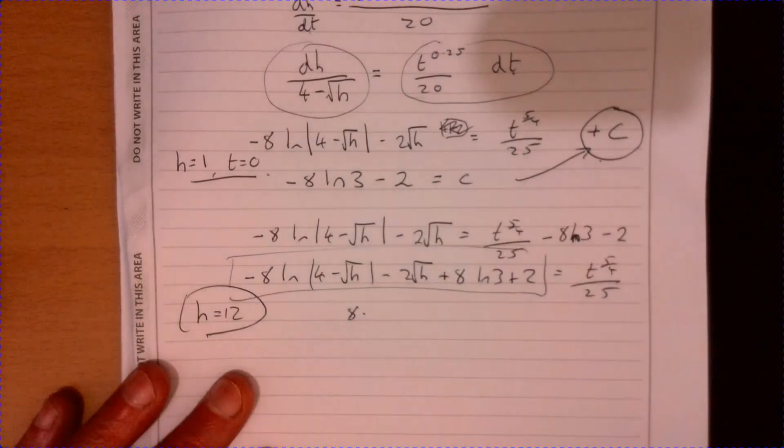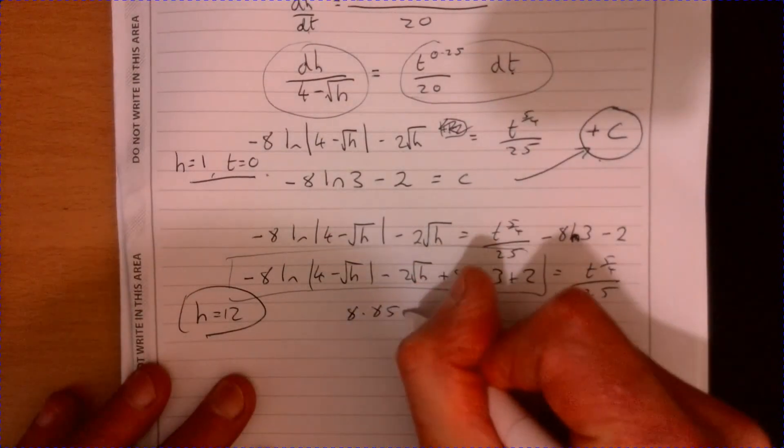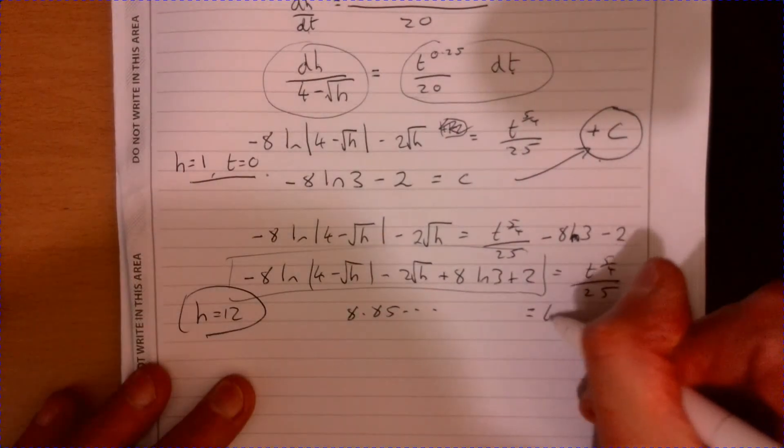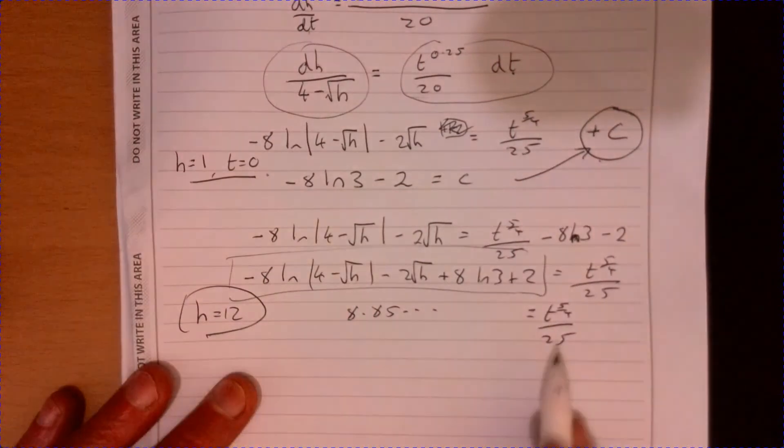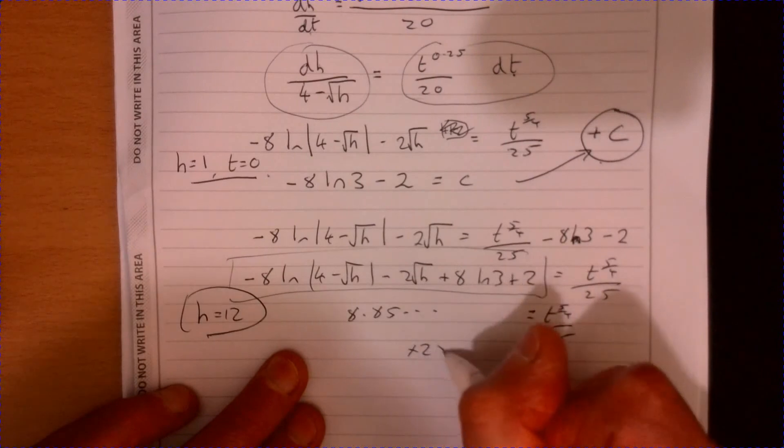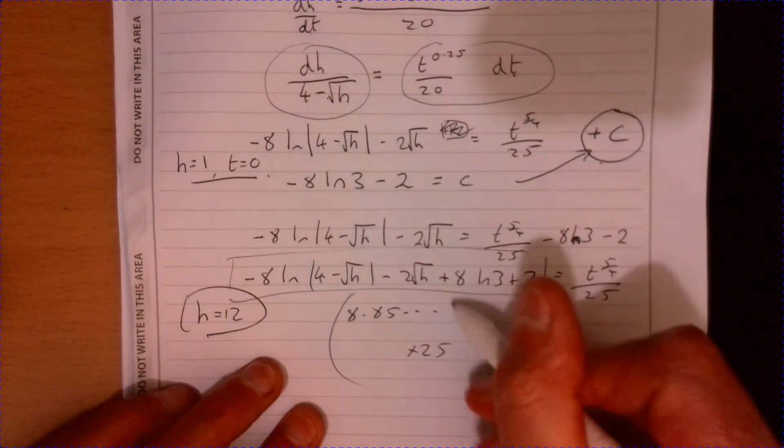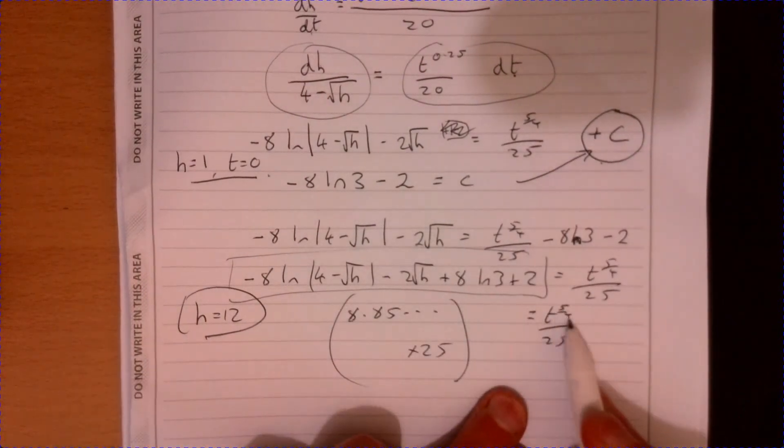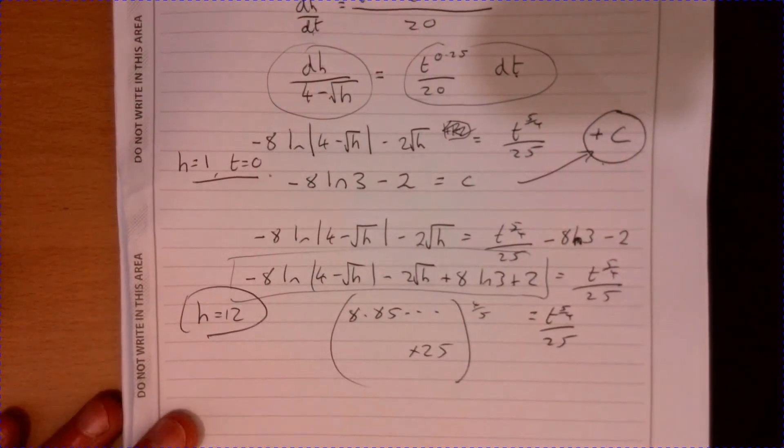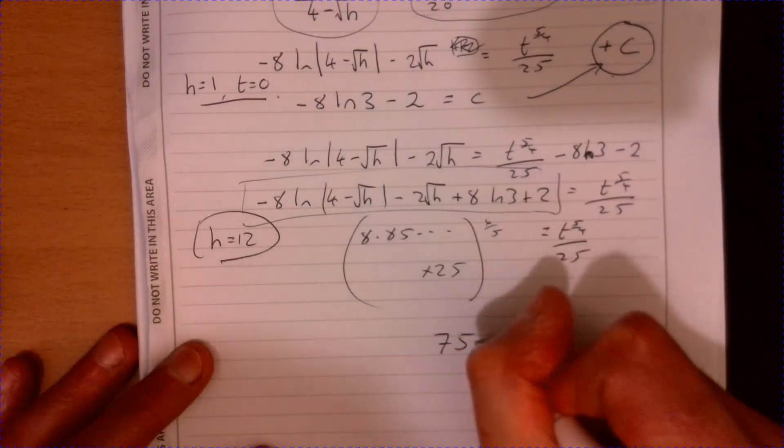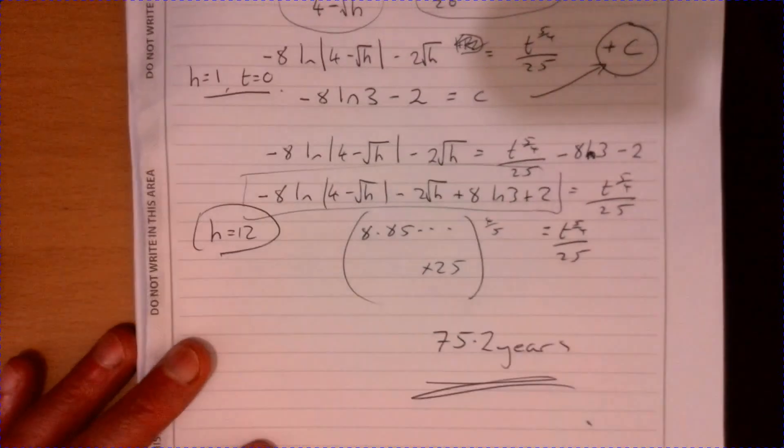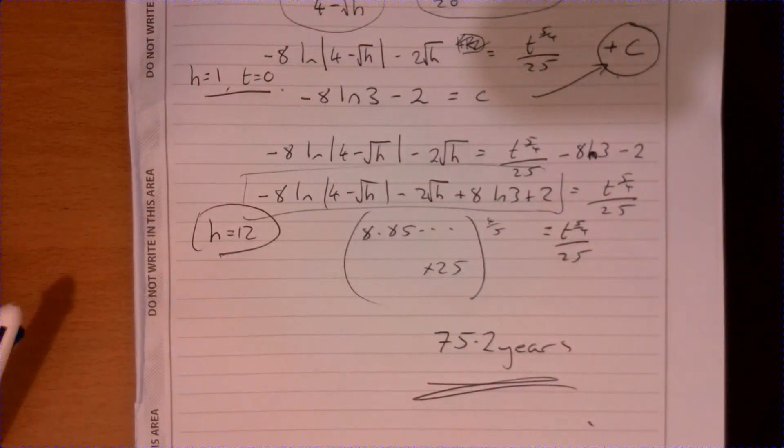That gives you 8.85 and some stuff. And we know that that's t to the 5 over 4 over 25. So multiply by the 25. And then do the whole lot to the opposite power. So in other words, to the power of 4 over 5. And that will give you 75.2 years. Good question, that.